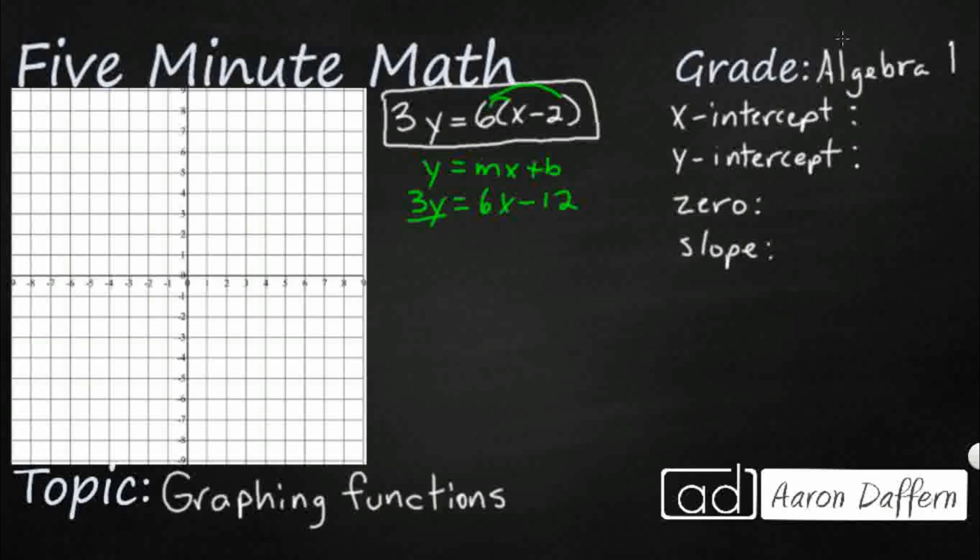Once we do that, we'll look really good, because it's going to be in that slope-intercept form. The whole thing was divided by 3, but I went ahead and just show that you can distribute out that divided by 3 into each term. So that's going to be y equals 2x minus 4.